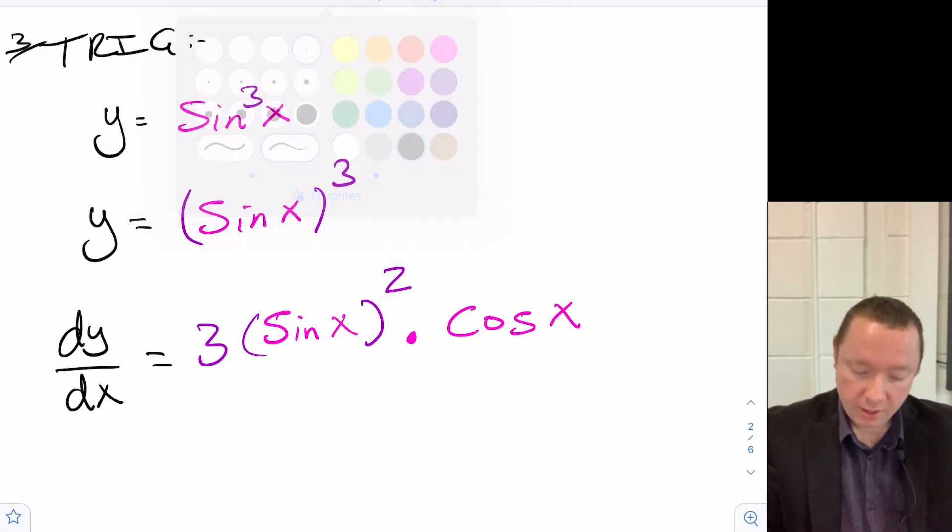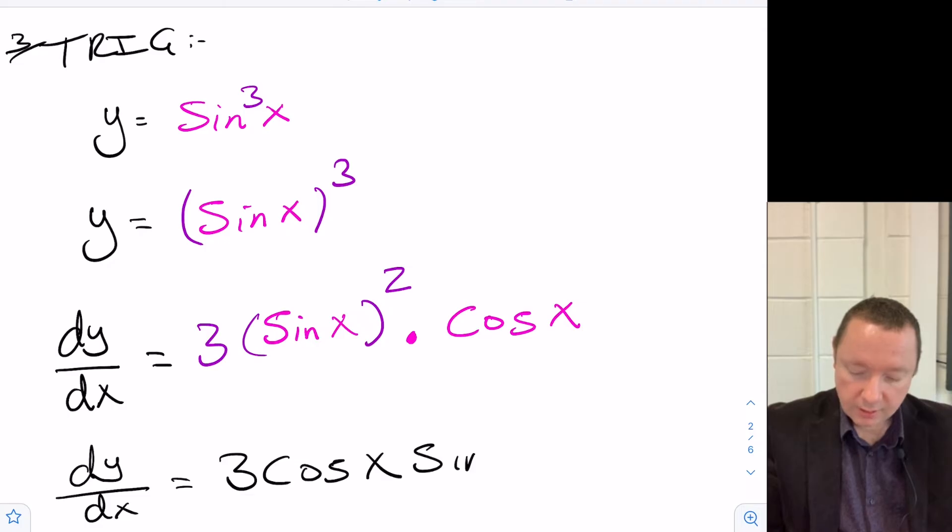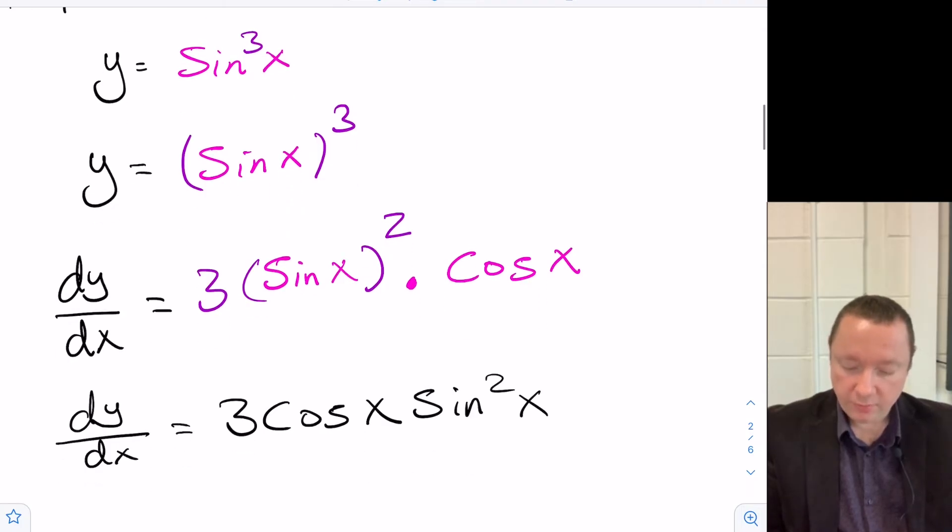Now we can just tidy that up. So dy/dx is equal to 3 cos x sine squared x because it's sine of x squared.